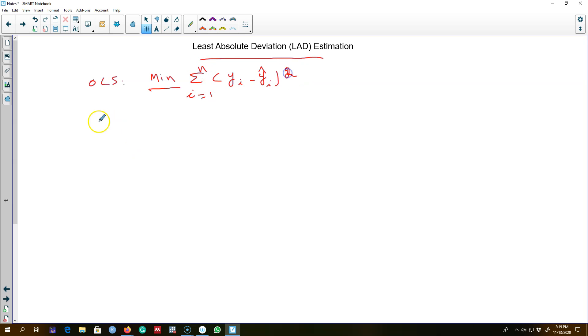So what this least absolute deviation method does, instead of minimizing the square of these residuals, it minimizes the absolute value of these residuals. So that's the main difference between LAD and OLS. This method is more resilient to outliers.